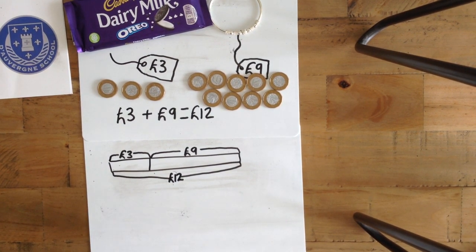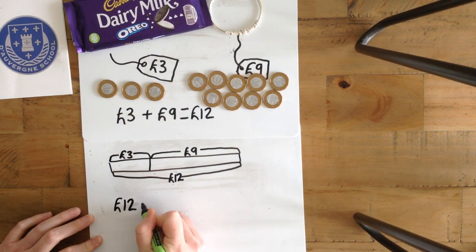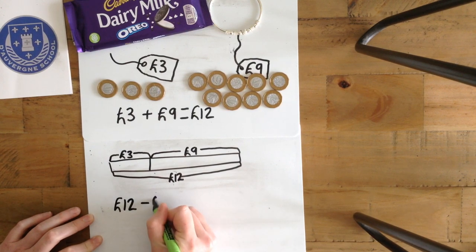To check our answer, we can do the inverse. We start with £12 and we take away £3.